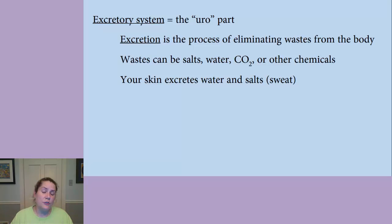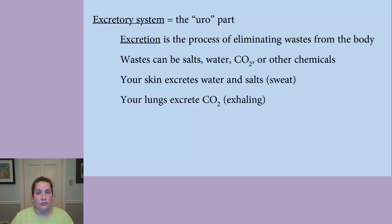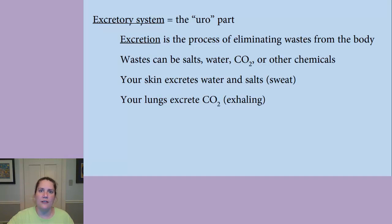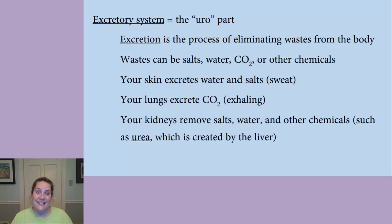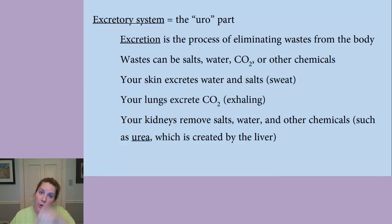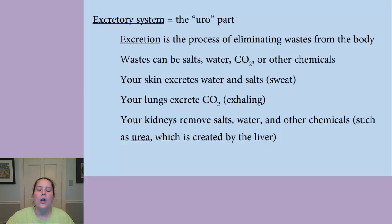Your excretory system actually includes your skin. Your skin is part of your excretory system because when you sweat, you get rid of extra water and different salts you don't need. Your lungs are part of your excretory system — they help you excrete carbon dioxide, a waste product your body needs to get rid of. Your kidneys are going to remove salts, water, and other chemicals such as urea. Urea is not the same as urine; it's a component of urine — a nitrogenous waste product created by your liver, but your kidneys help take care of that.